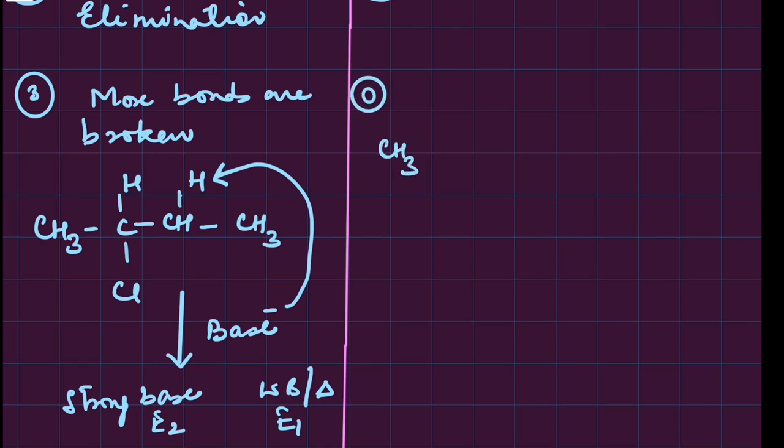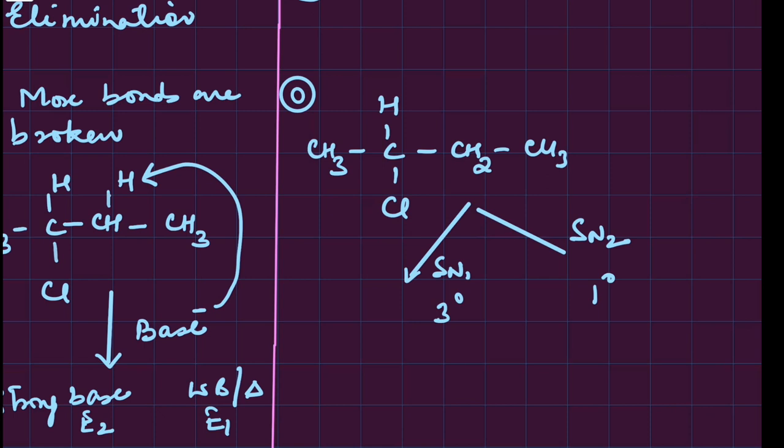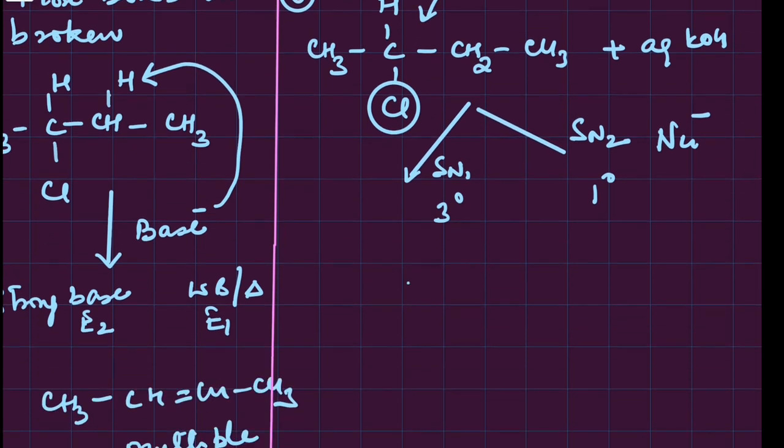In substitution, we have two categories: SN1 or SN2. SN1 usually happens on three degree halides and SN2 happens on one degree halides. Let's take aqueous KOH - it can act as a base as well as nucleophile, depending upon the situation. The nucleophile can either attack from the back forming a transition state in SN2, or it can form a carbocation. The final product will be CH3-CH(OH)-CH2-CH3. One sigma bond broken, one sigma bond formed, so energetically it's very viable.